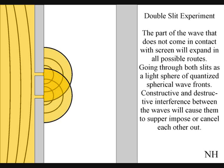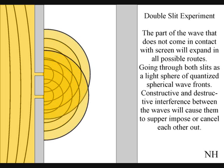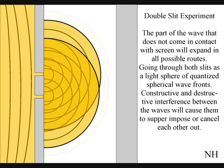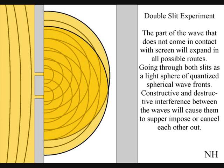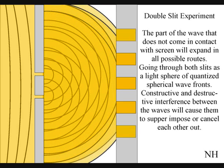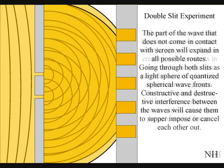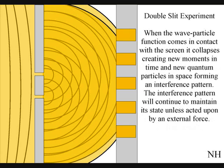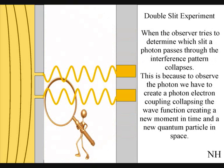Interference between the waves will cause them to superimpose or cancel each other out. When this wavefunction comes in contact with the screen, it will collapse, creating moments in time and an interference pattern. When the observer turns on the detector to determine which slit a photon passes through, the interference pattern collapses. At that moment in time, the interference pattern disappears.